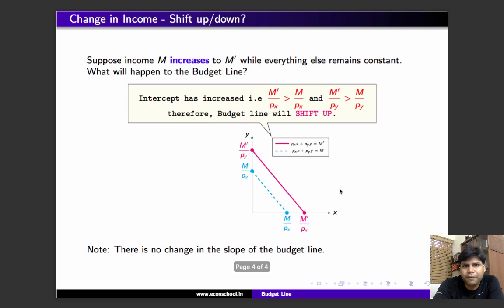Suppose we change the income from M to M'. Then the budget line will shift outwards like this. This is very simple. You can notice there is no change in the slope of the budget line.